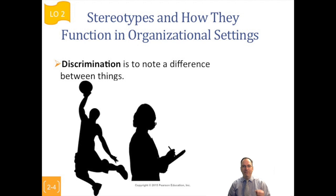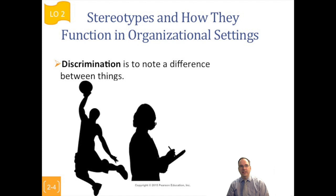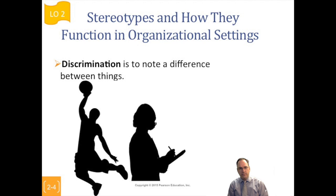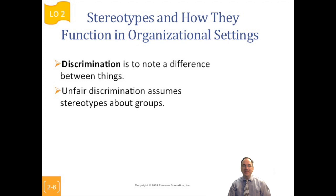We know these bundles of things, but what we don't know is about the individual — whether the individual basketball player is any good, or whether that doctor is a quack. If we just looked at the Asian woman in a white coat, we'd think all kinds of things we might not be able to legitimately attribute to her. Unfair discrimination is assuming that a stereotype about a class of person is true about that individual.